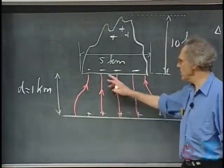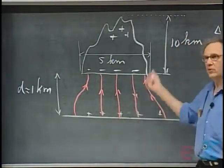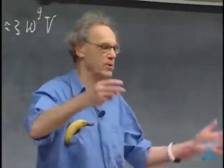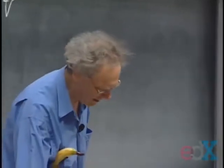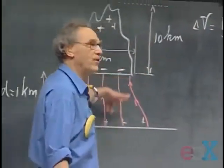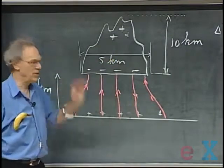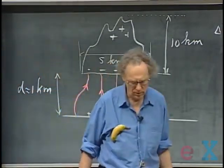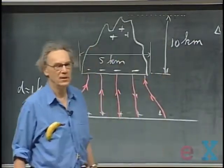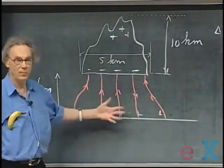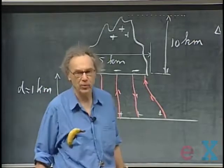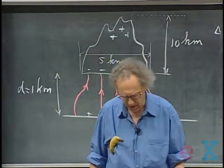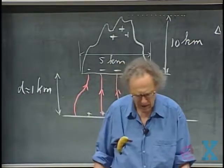During five or ten return strokes, 25 to 50 coulombs total are exchanged between the cloud and earth, lowering the potential difference. When it drops too low, the process stops. You wait for the cloud to recharge — which can take four to twenty seconds — and then lightning strikes again. After a return stroke, about twenty milliseconds later, the whole process can start again, with the new step leader following exactly the same path because that's where the air remains ionized and conductivity is highest.